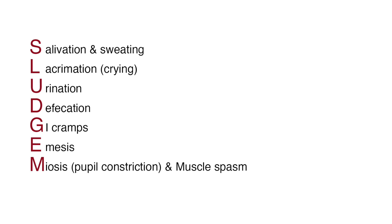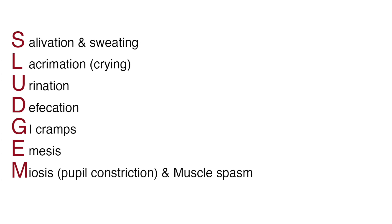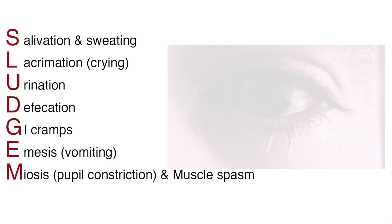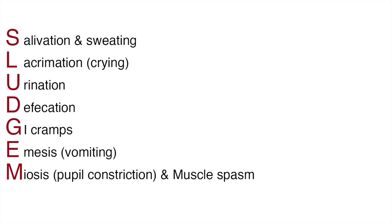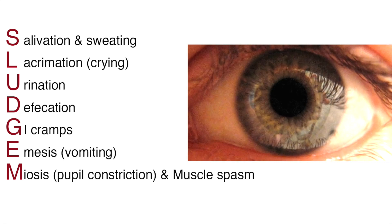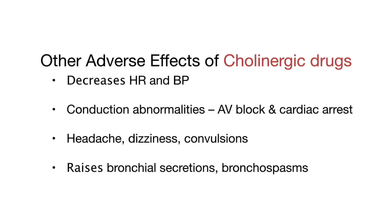Too much cholinergic medication can lead to overstimulation of the parasympathetic nervous system and unwanted side effects. The acronym SLUDGE-M will help us remember the adverse effects of cholinergic drugs. Additional adverse effects include decreased heart rate and blood pressure, conduction abnormalities leading to AV block and cardiac arrest, headache, dizziness, convulsions, increased bronchial secretions, and bronchospasms. Overdosing can cause life-threatening problems, and the antidote for cholinergics is the anticholinergic drug atropine.